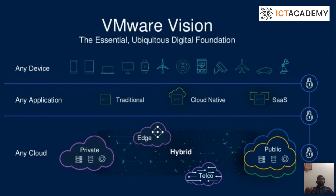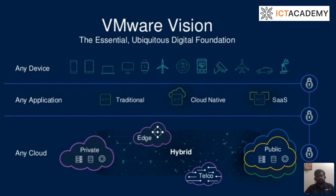This is the VMware vision. VMware is partnered with multiple organizations in the market — AWS, Google, IBM, and Microsoft. All of these cloud organizations use VMware's technology in their cloud environment. VMware has specific capabilities that bring value to these cloud organizations, which is why we have associations with all major cloud vendors. The essential vision of VMware rests on three pillars: any device, any application, and any cloud.